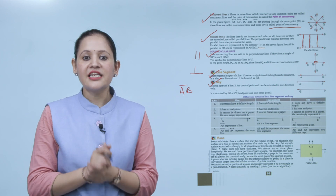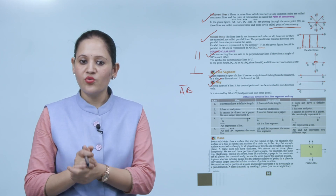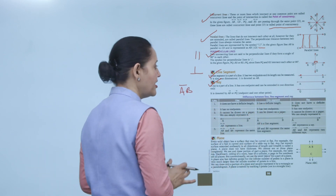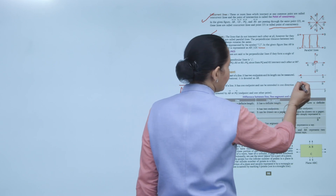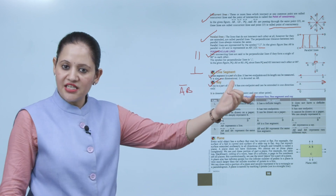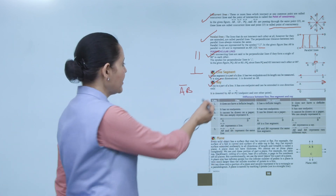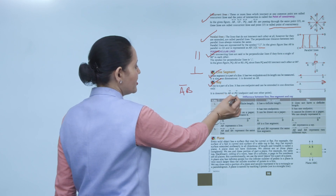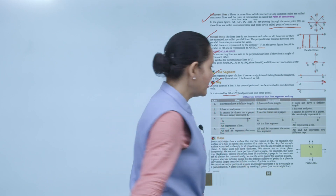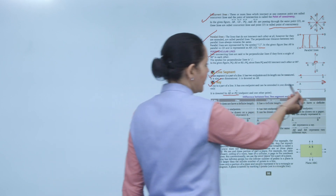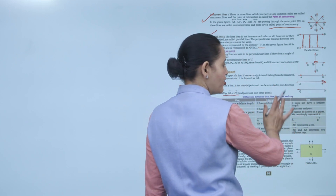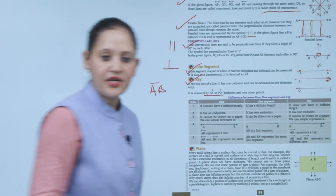Next is ray. A ray is also a part of a line. It has one endpoint and can be extended in one direction only. It is denoted by a one-sided arrow, showing it can extend endlessly in one direction. It is written as ray AB — one endpoint and one other point. We write PQ, not QP, for a ray.